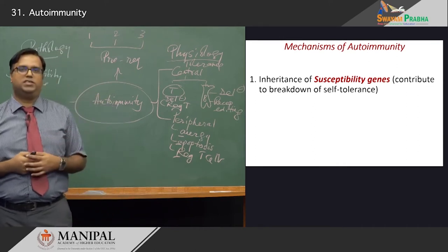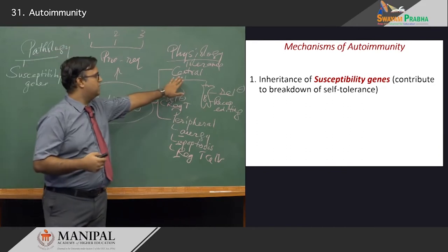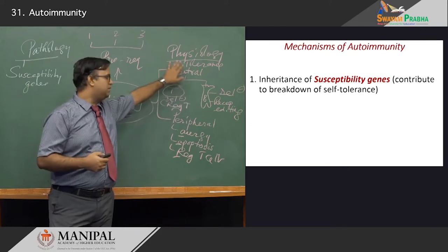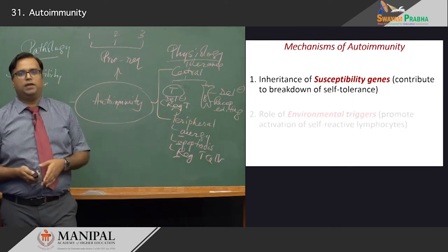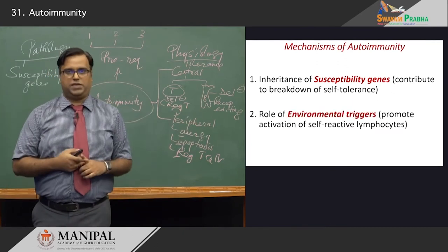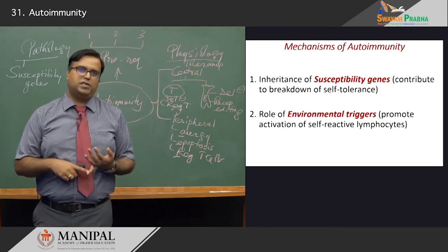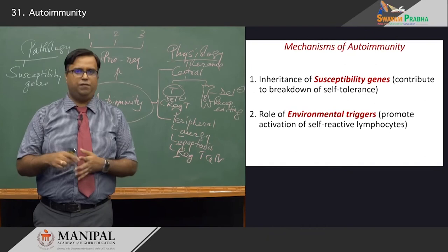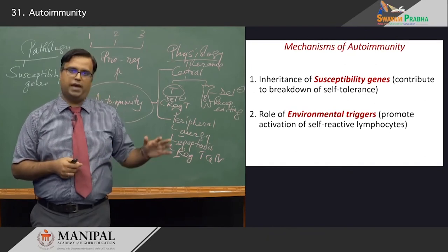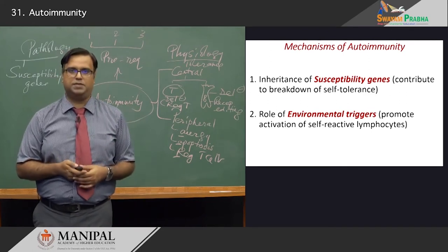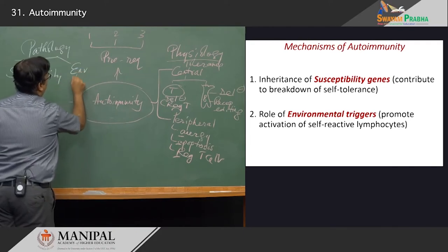What do these susceptibility genes do? Effectively they contribute to the breakdown of immunological tolerance, breaking it down at different stages and resulting in lymphocyte activation. The other important trigger that is required is an environmental aspect — environmental triggers such as infections, different allergens, or various miscellaneous conditions can promote the activation of self-reactive T lymphocytes and B lymphocytes. So you have susceptibility genes and then you have environmental factors.